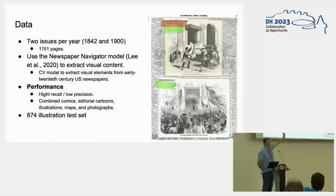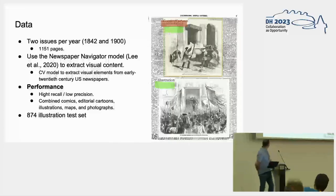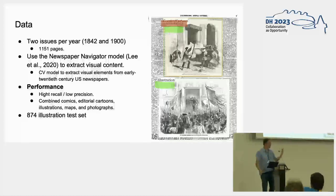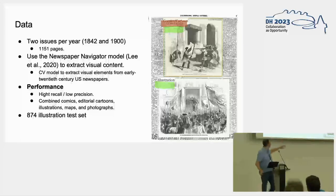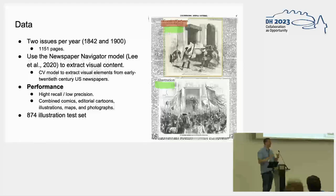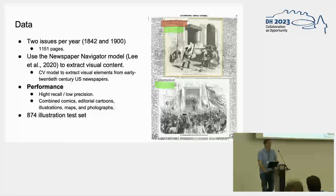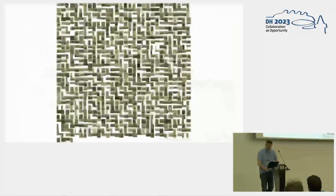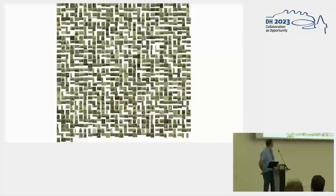This example shown is actually not the Illustrated London News but the French imitator — the same idea. The Newspaper Navigator model performs very well, but the problem is that we have a very high recall — it recognizes the illustrations on the page — but a very low precision, so it recognizes illustrations as, for example, a comic or an editorial cartoon, categories Ben included in the model. In the end we combined all these different categories into one and said all images recognized by the model are illustrations. This resulted in around 18,874 illustrations.